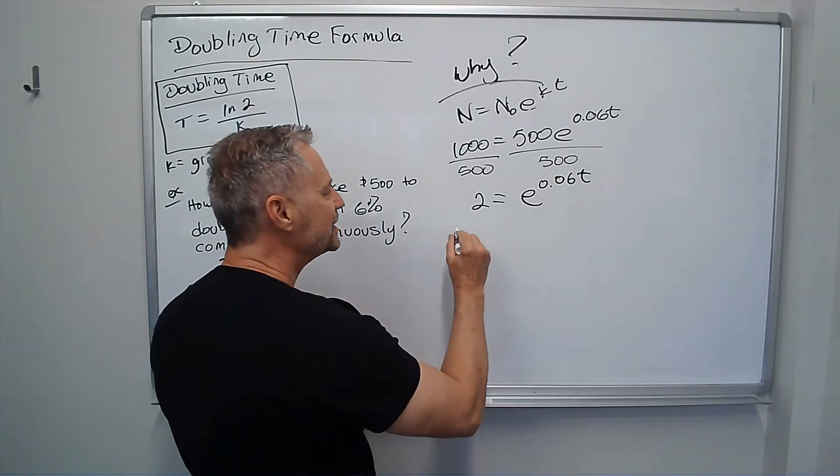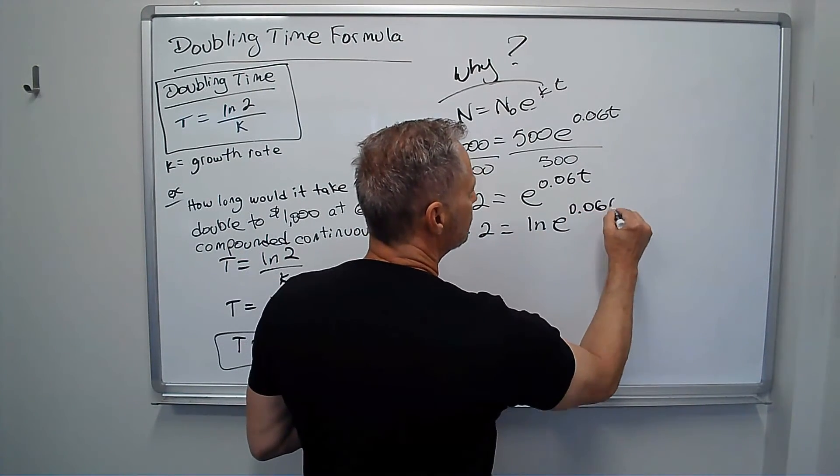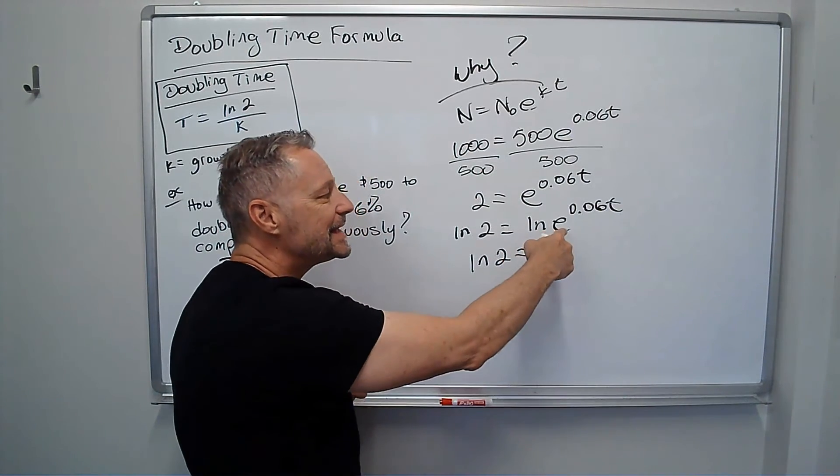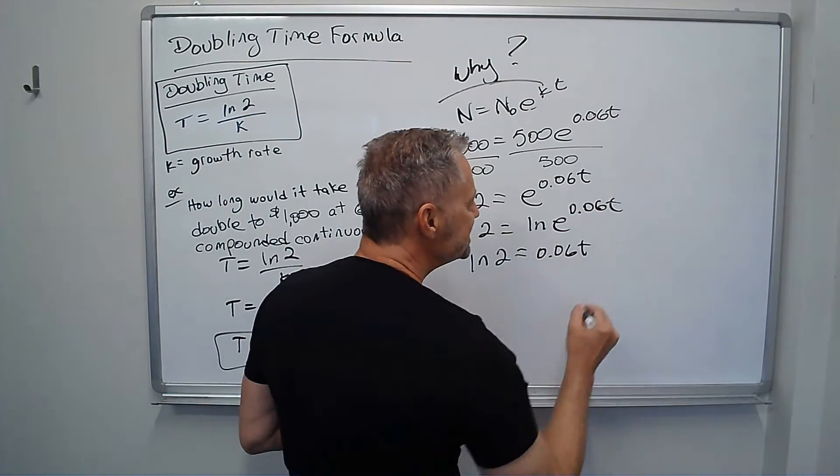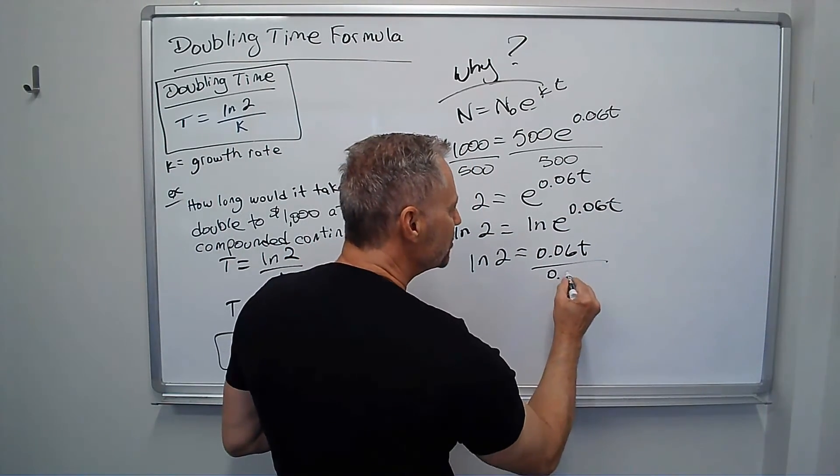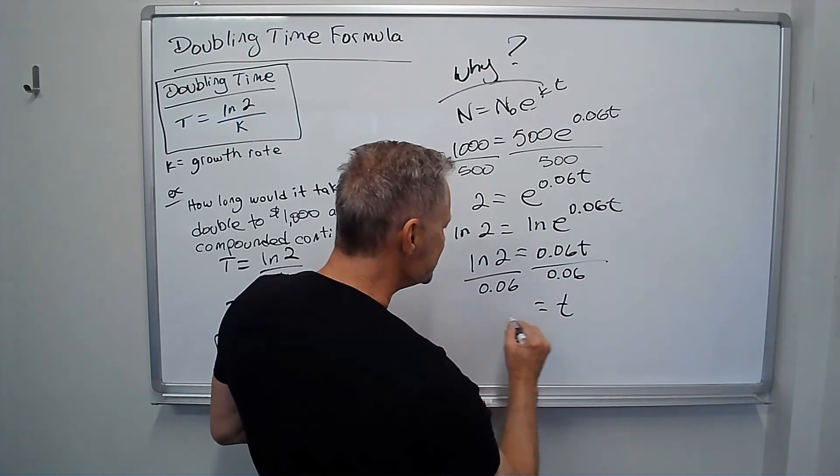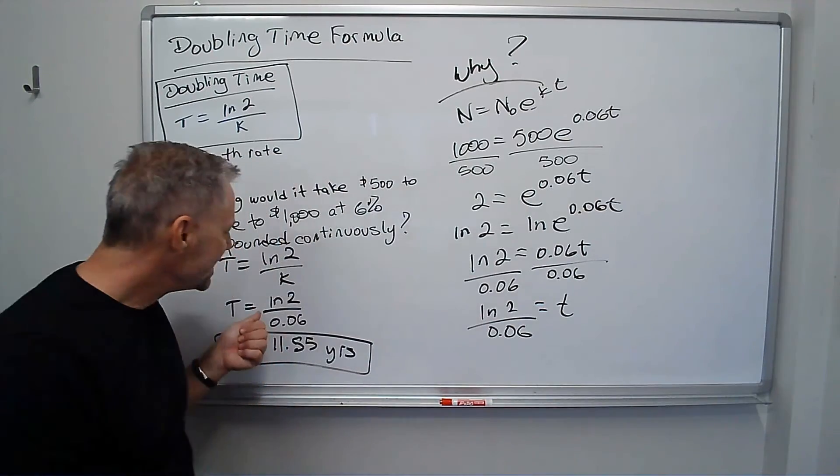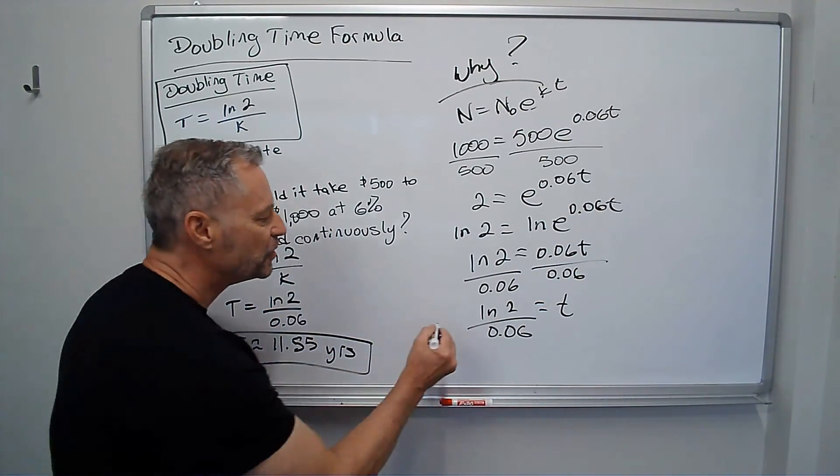Remember to solve that, I take the ln of both sides. So I've got ln of 2 equals ln cancels out of e. Those are inverses. I just get the exponent, 0.06t. I divide by the 0.06. And I get t is ln of 2 divided by 0.06 is what we said right here for the problem. We know that's about 11.55 years.